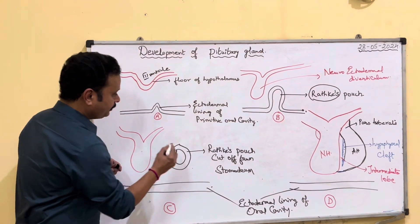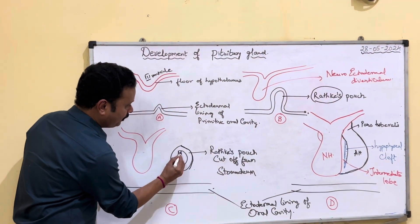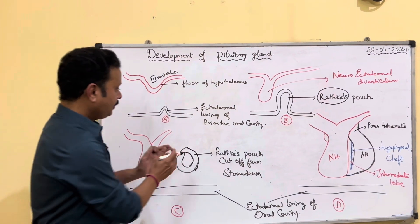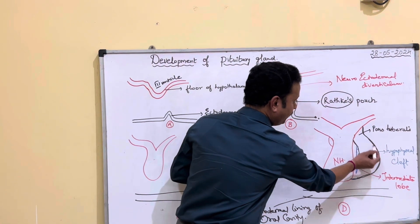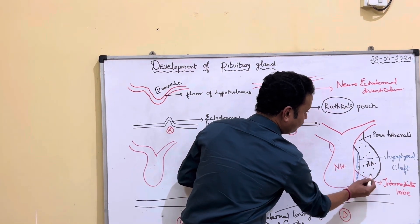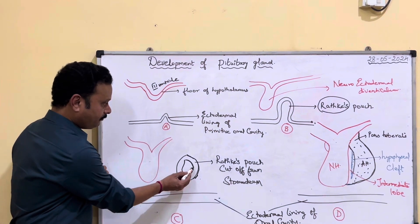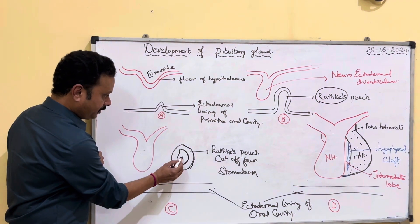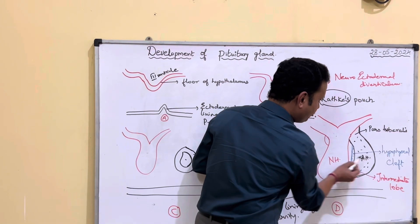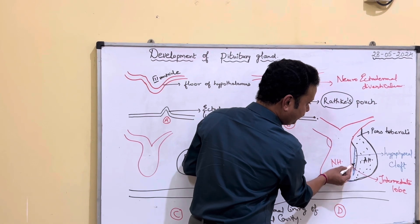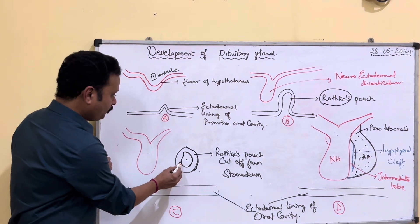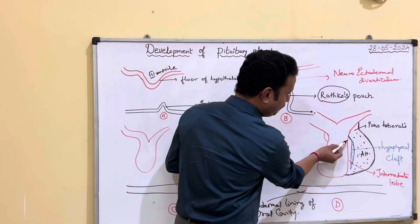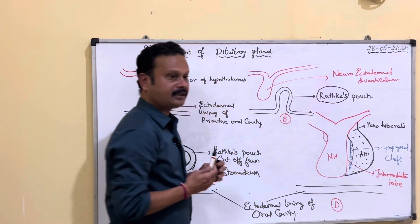The anterior wall of Rathke's pouch grows enormously and forms the anterior lobe of the pituitary. The cleft persists as the hypophysial cleft, and the posterior wall gets thinned out and persists as the intermediate lobe or pars intermedia.